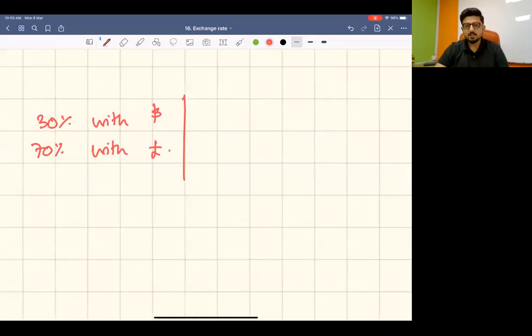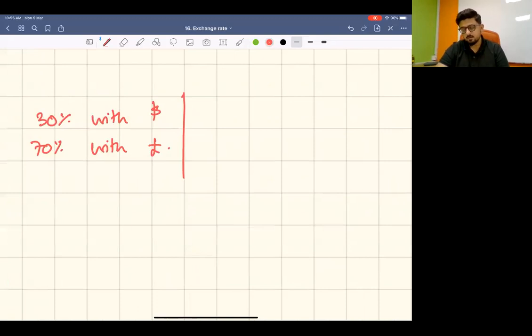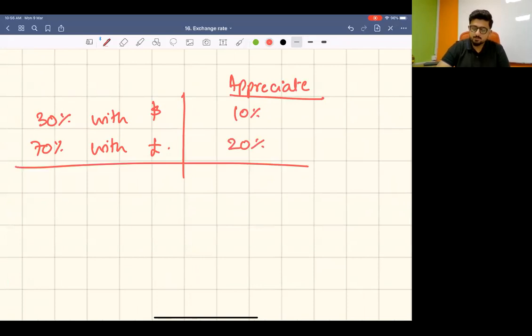the country's currency appreciates - let's say it appreciates 10 percent against dollars and 20 percent against pounds. Now to understand the trade-weighted exchange rate, we need an index. The base value of the index